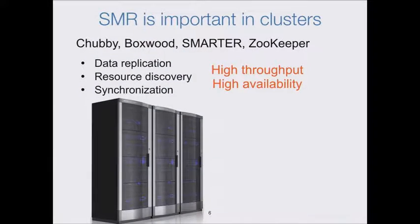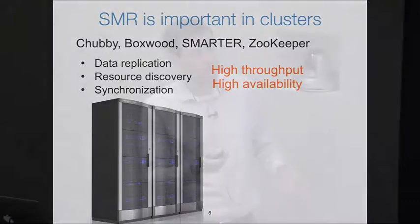State machine replication is really one of the most important primitives we have in distributed systems. It is important, for example, in local area clusters — systems such as Chubby, Boxwood, Zookeeper — they use state machine replication to implement operations as diverse as replicating data, resource discovery, and distributed synchronization. Because we build larger and larger clusters, there is increasing pressure on these implementations to have higher throughput and availability.